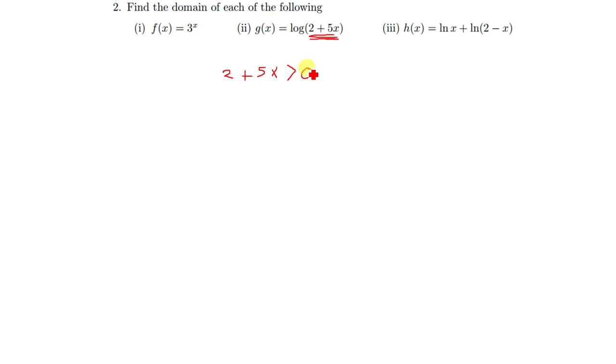So now let's quickly solve this equation. We have 5x is greater than negative 2, so meaning the value of x there will just be greater than negative 2 over 5.